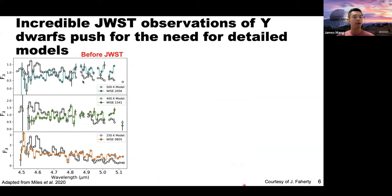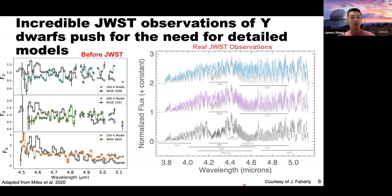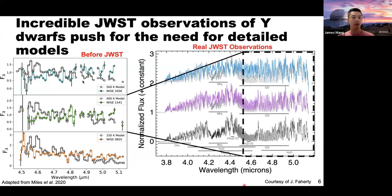Before JWST, ground-based observations of Y-dwarfs from Miles et al. 2020 showed that models could sort of fit the data, but not really well across all spectral features. Now with JWST, we can observe Y-dwarfs at much higher resolution — showing here a selection of data from Jackie Faherty's program, demonstrating the exquisite data JWST is providing. These high-resolution observations really motivate us to develop new, improved models. If we couldn't fit lower-resolution objects before, it's going to be much more difficult at JWST resolutions. We're also learning a lot from these early observations about chemistry and physics not considered in previous models.